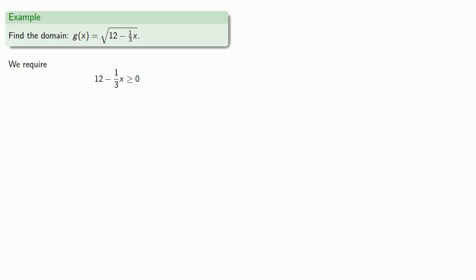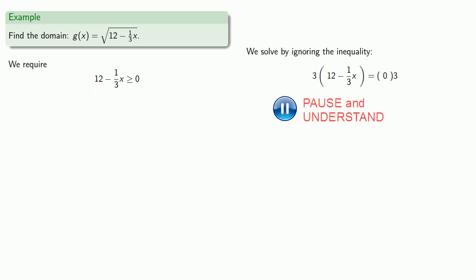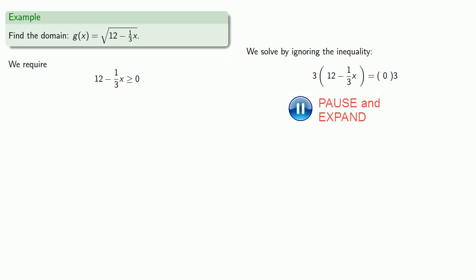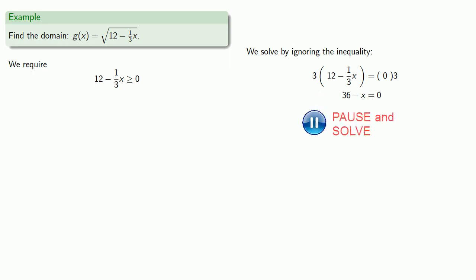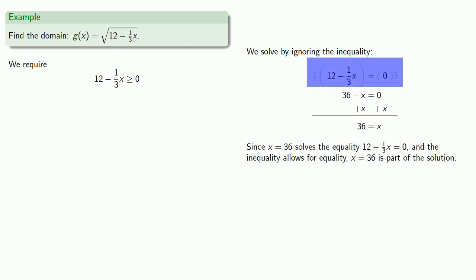So we require the radicand be greater than or equal to zero. We'll solve by ignoring the inequality first. Let's get rid of the fraction by multiplying both sides by 3, simplify, and solve. Remember, x = 36 solves the equality 12 − x/3 = 0. And since the inequality allows for equality, x = 36 is part of the solution.